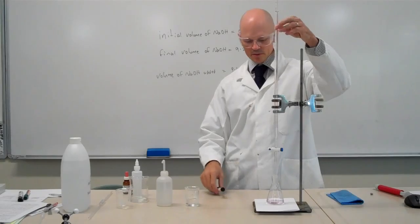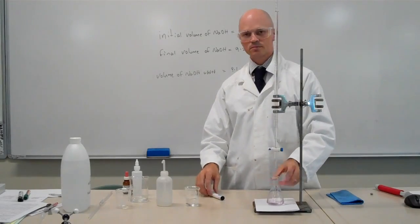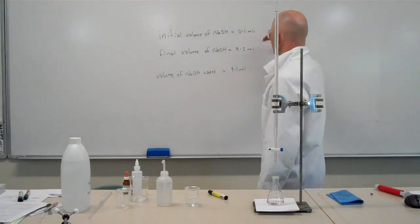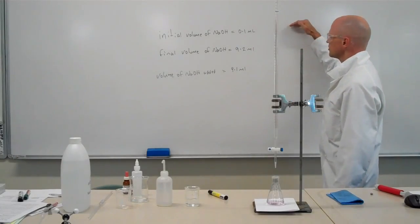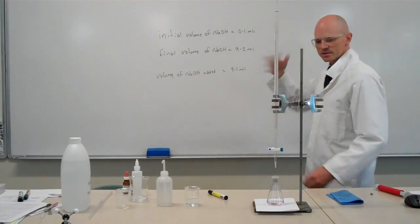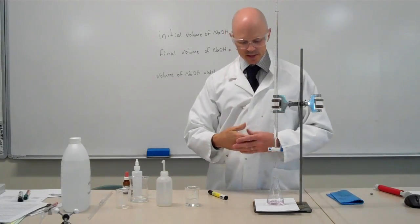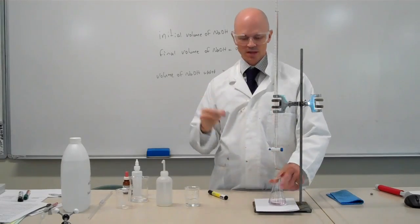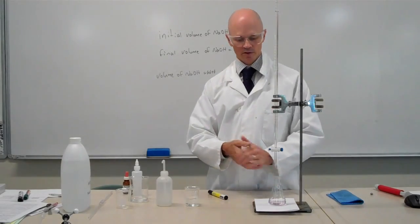Now I would then repeat that whole titration at least twice more. So I'd start off with my initial volume as 9.1 ml and then I'd just do the same process. You need to have at least three very consistent results. That's within about 0.1 ml of each other.